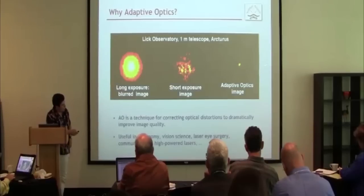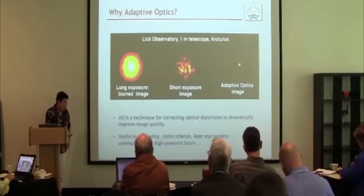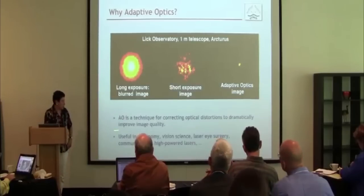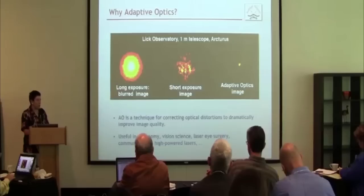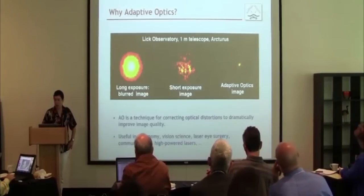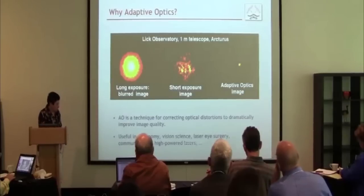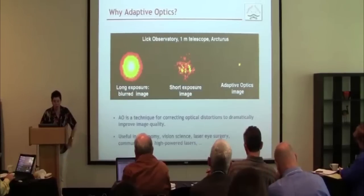The technical term is adaptive optics, or AO — a method for correcting optical distortions of any kind so as to dramatically improve image quality. You can use it in astronomy, in imaging the living human retina, in laser eye surgery, in optical communications, inside high-powered lasers, and in experimental biological deep tissue imaging, which is happening here at the School of Engineering.